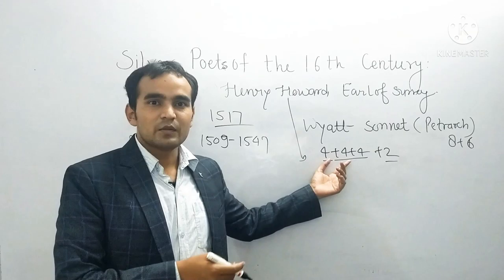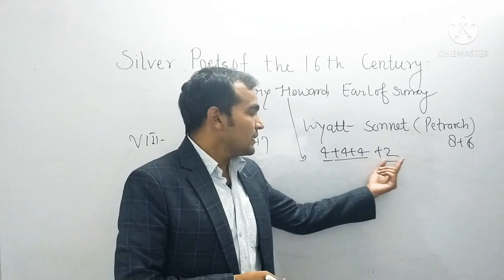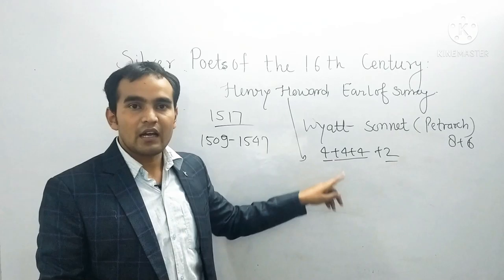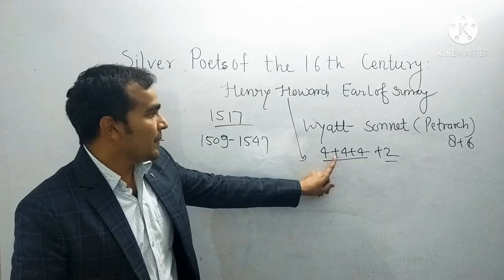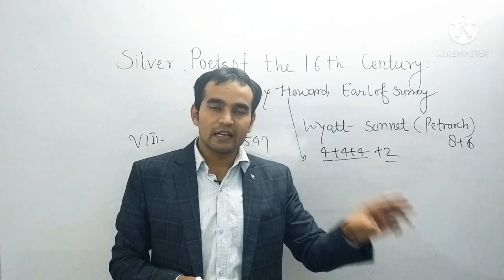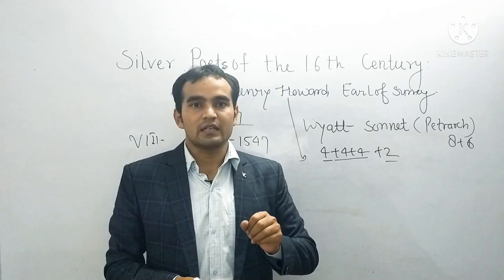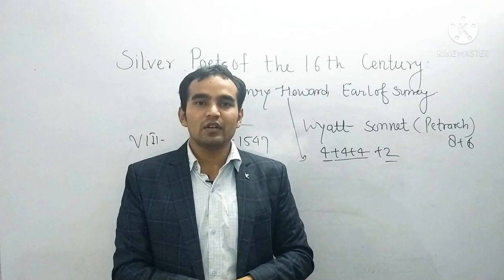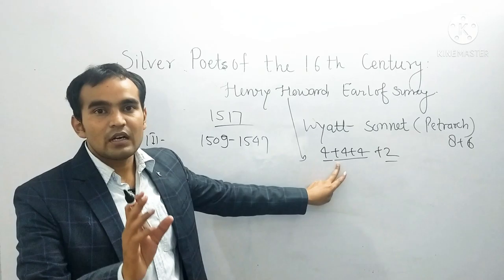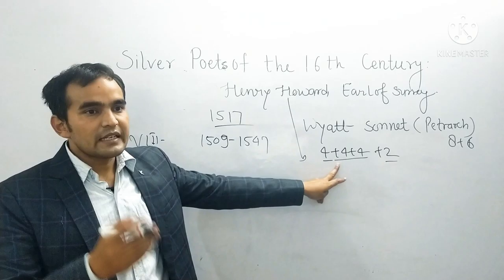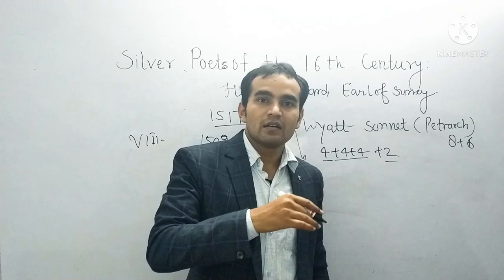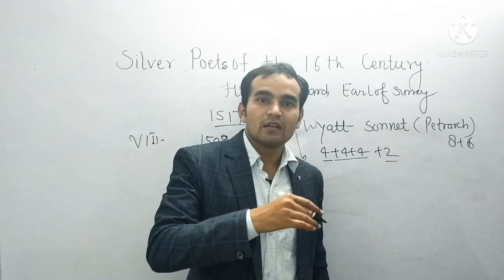Henry Howard changed the structure to 4 plus 4 plus 4 - that is, three quatrains and then one couplet. So when Wyatt had the 8 plus 6 structure, Henry Howard reformed it into the form of the Shakespearean sonnet - three quatrains plus one couplet. Wyatt introduced the Petrarchan model of sonnet in England, whereas Earl of Surrey introduced the English model of sonnet.